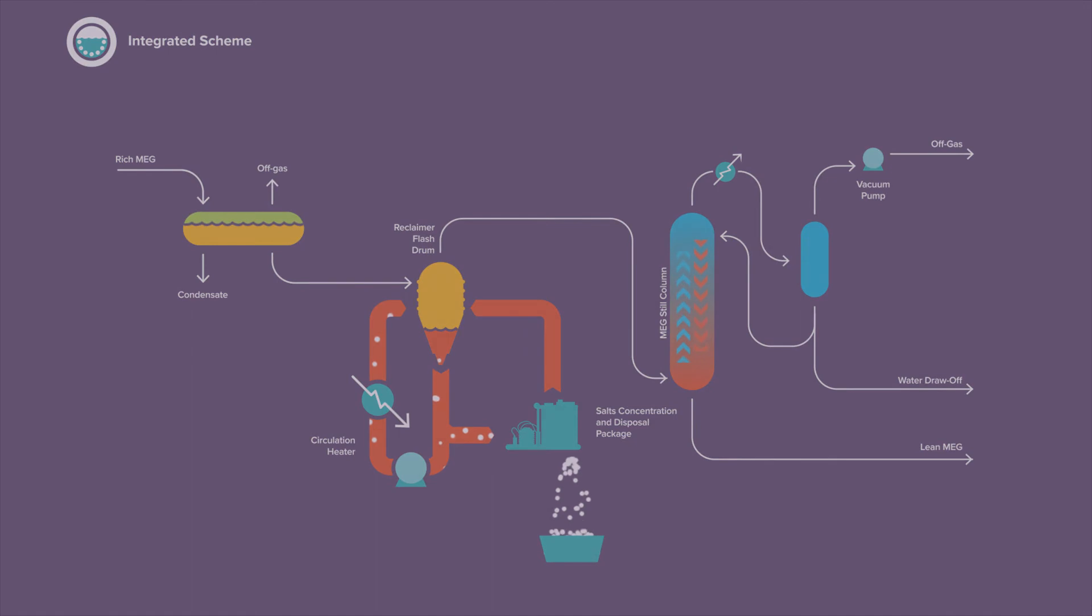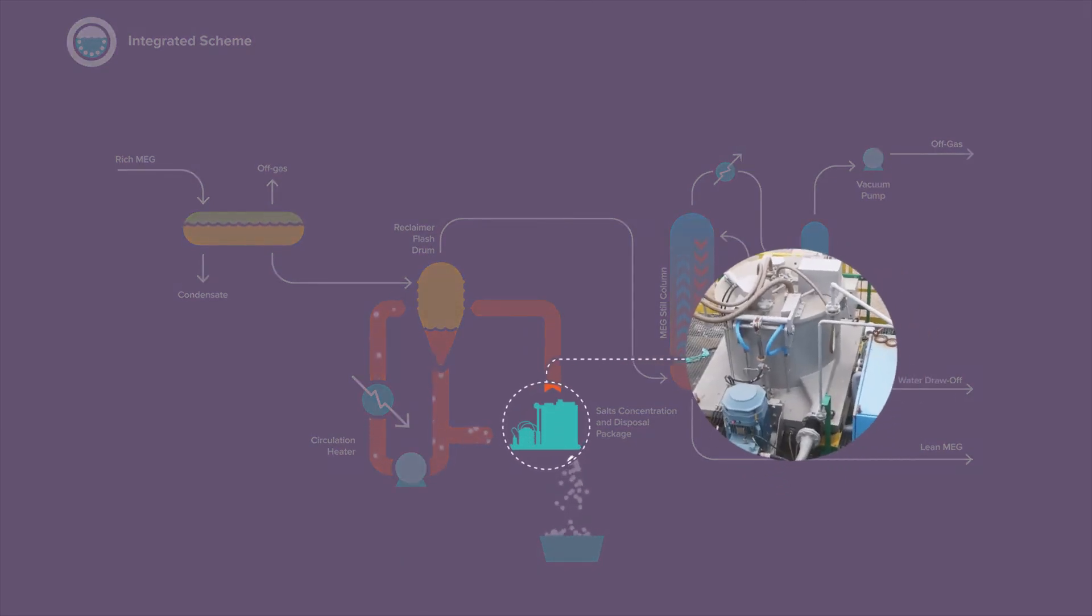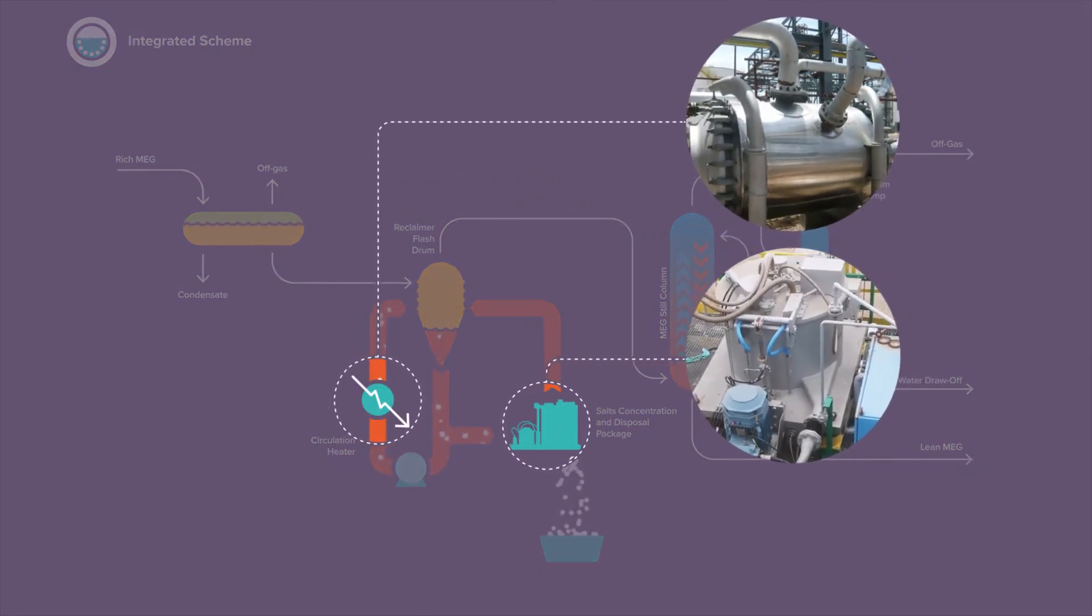Specific equipment, such as vertical basket centrifuge or spiral plates heat exchangers, are selected for their reliability in slurry services.